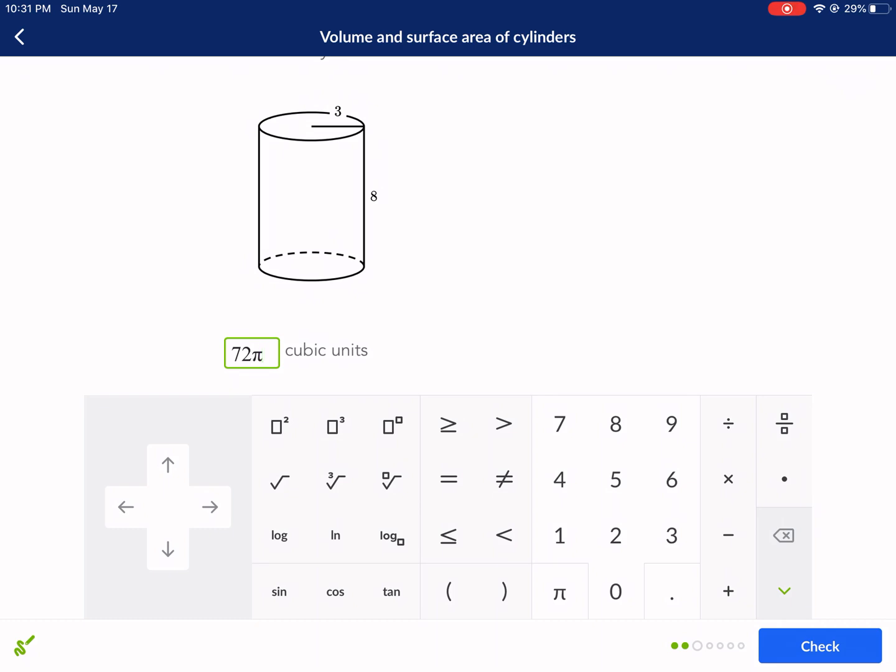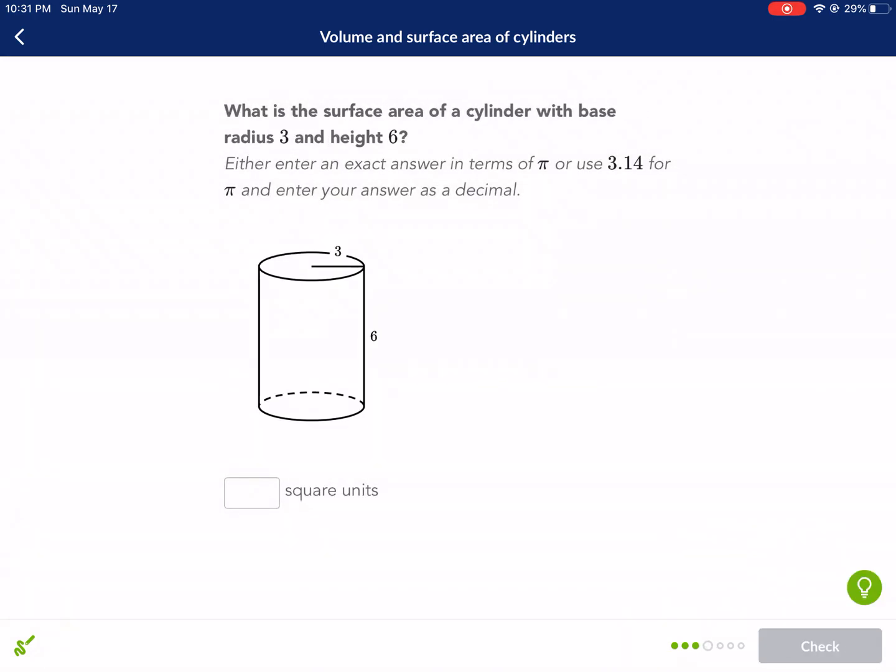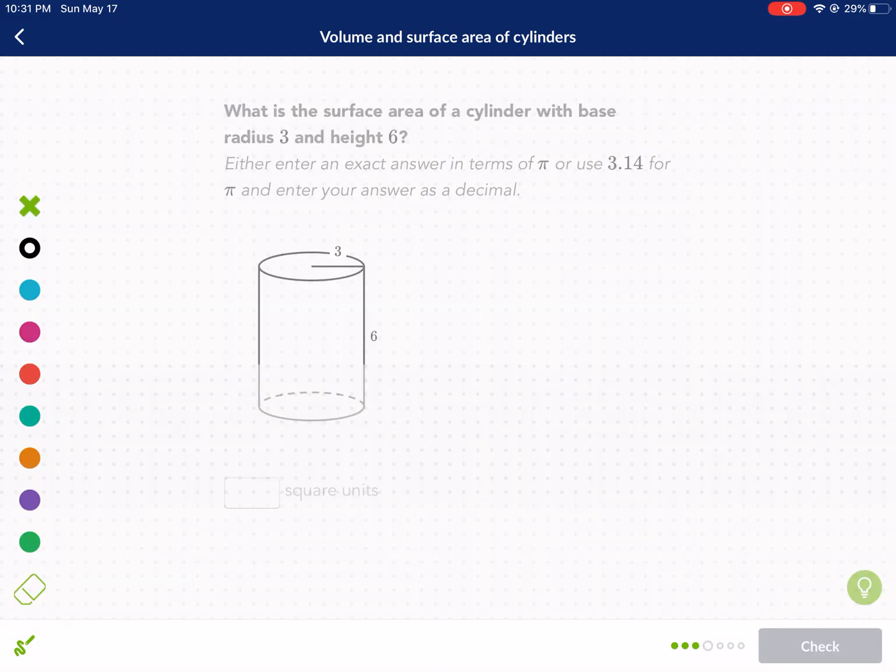So put 72π cubic units, check answer. Let's do one more. Surface area. Surface area, we know, is our lateral area, which is 2πr—that's the circumference—times the height of the cylinder, or the perimeter times the height. That's what any prism is going to be.